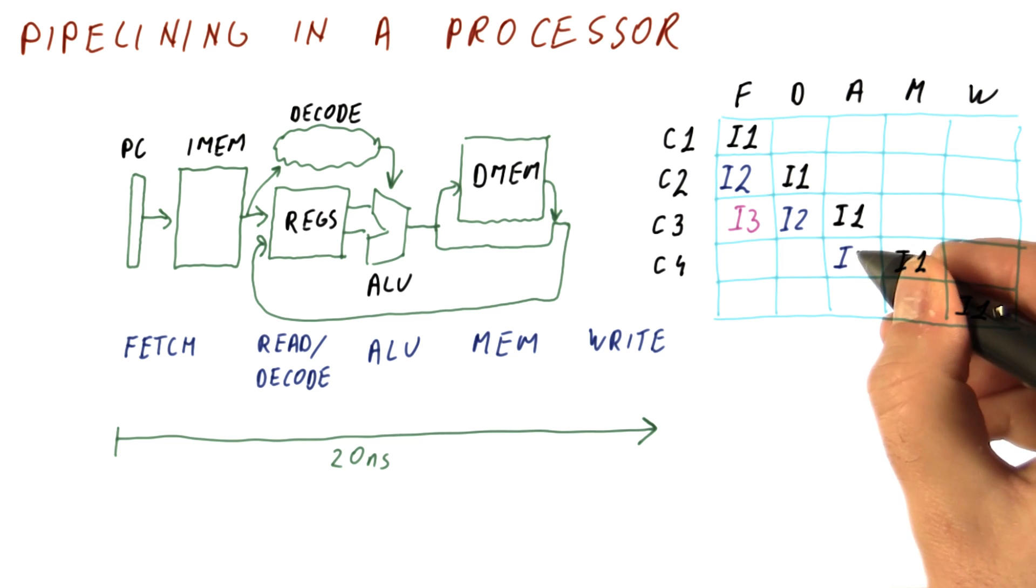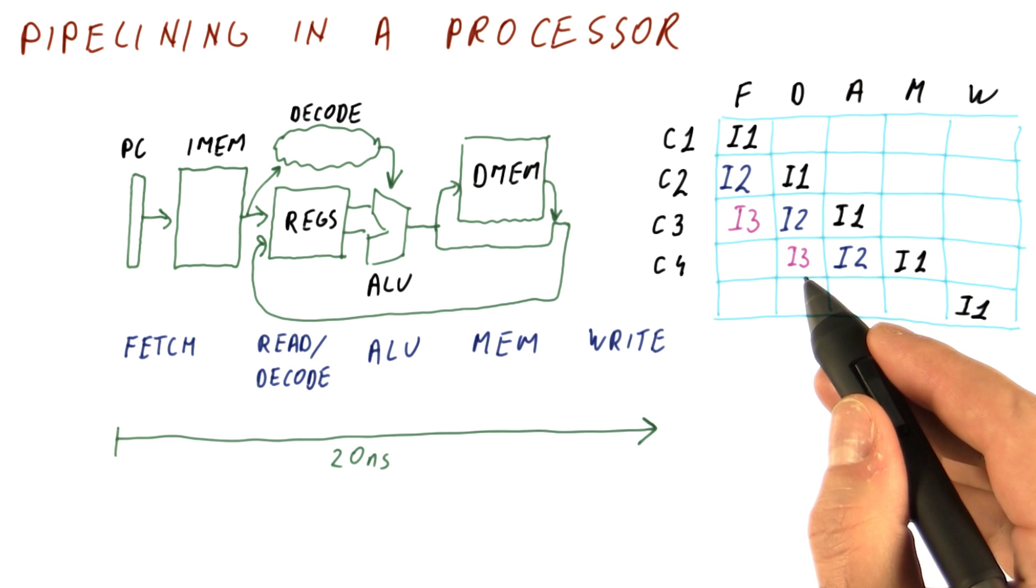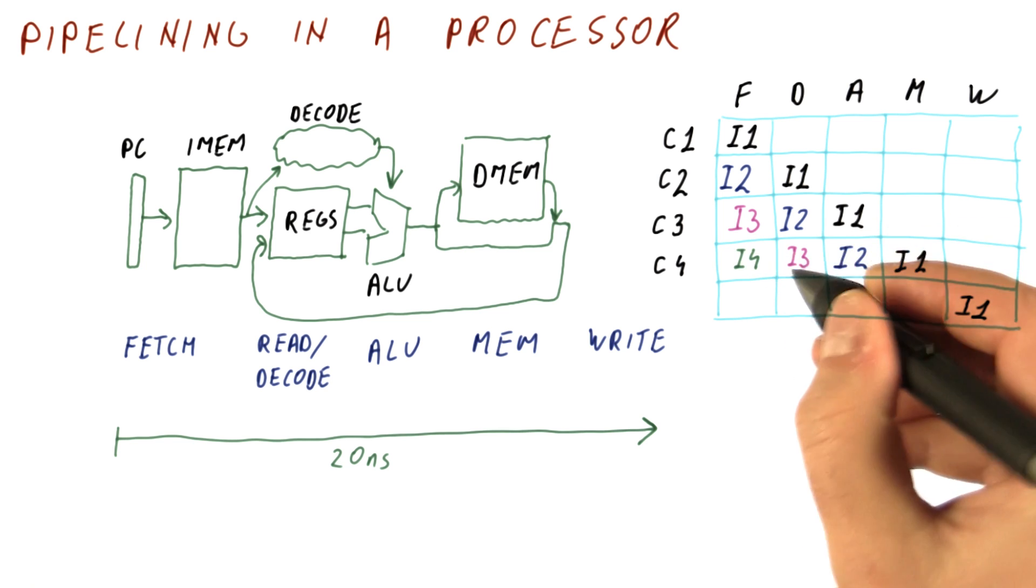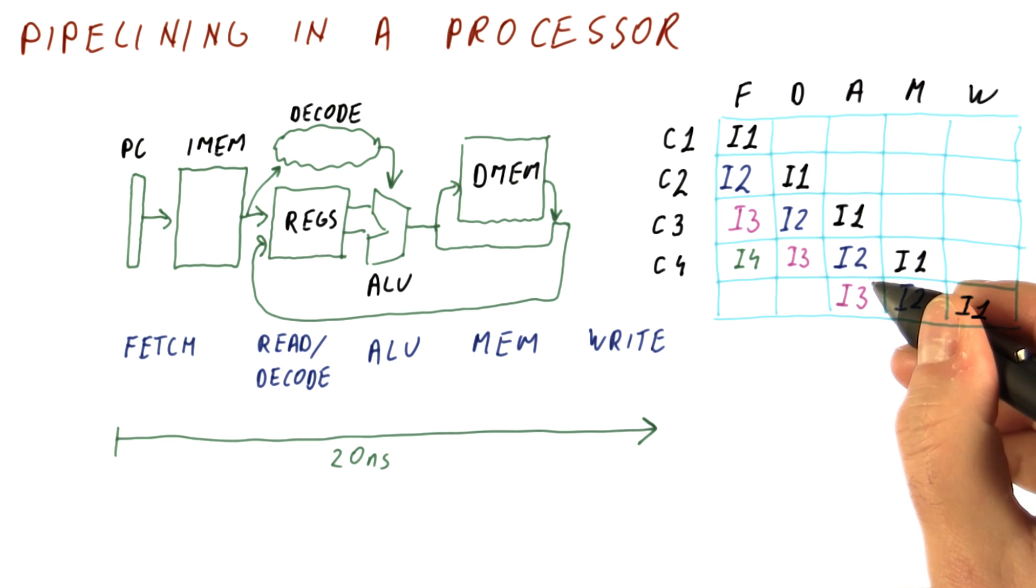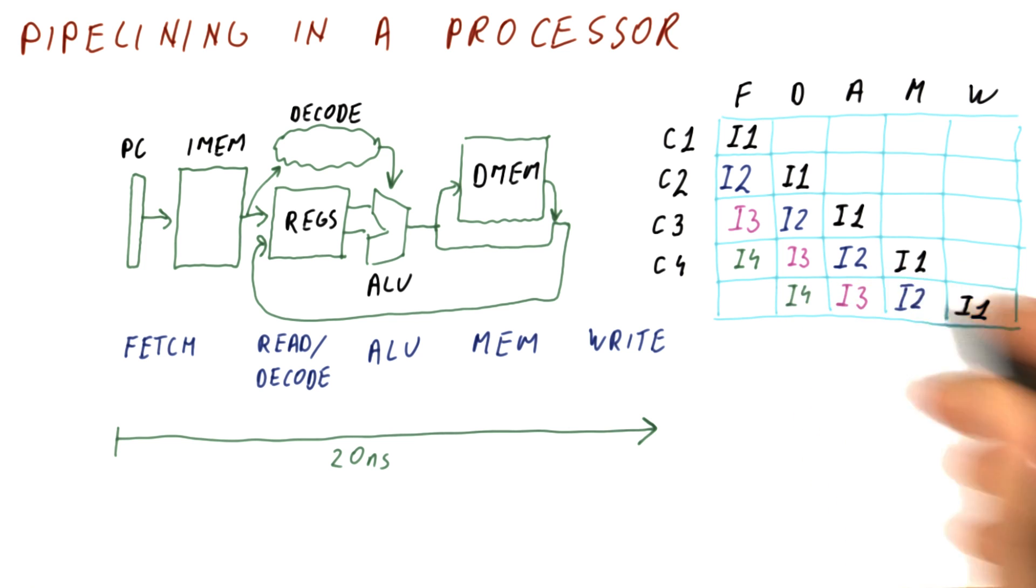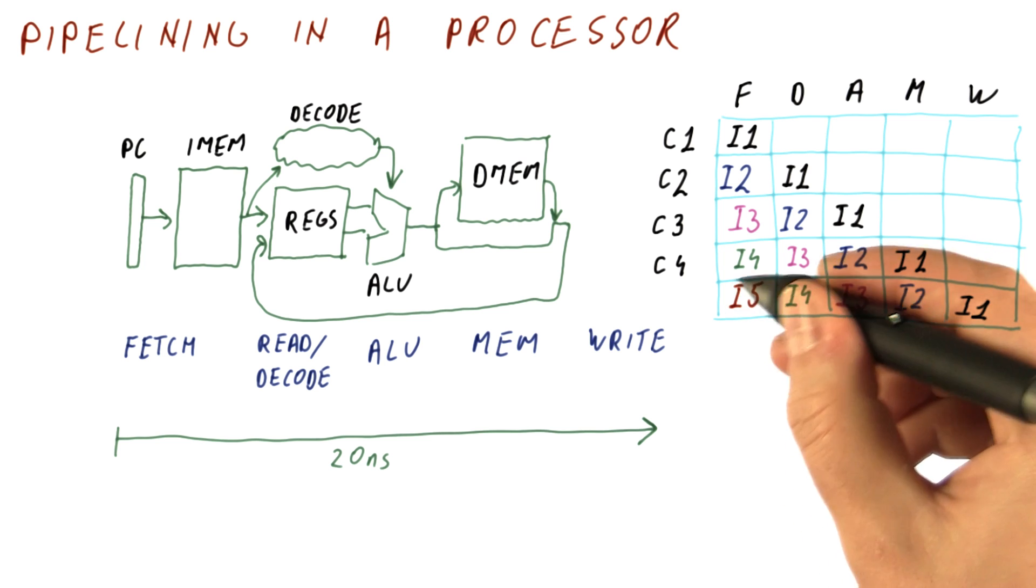I1 is in the memory stage, I2 will be doing the ALU operation, I3 will be decoded, and I4 will be fetched. Then when I1 is in the last part of the pipeline, I2 will be right after it in the memory stage, I3 will be doing the ALU operation, I4 will be decoded, and we'll be fetching instruction I5.